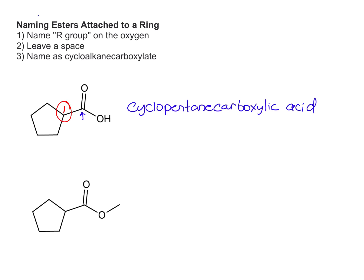So now if we transition to esters, what we have to do is we'll drop the IC acid and change that to ATE. And then we also have the R group on the ester to deal with. So for this one, we have our R group on the ester, which is just methyl. And then our parent is cyclopentane carboxylate.